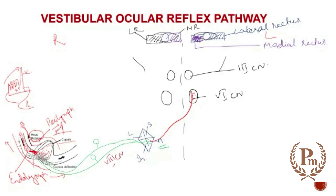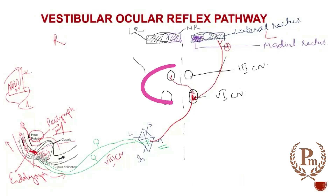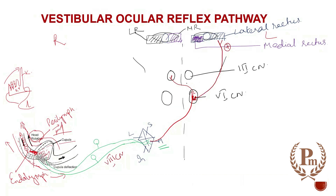From the vestibular nucleus, the fibers ascend and give the next-order neuron at the sixth cranial nerve. From the sixth cranial nerve, please pay close attention: the fibers go and directly stimulate the lateral rectus muscle, and via interneurons they go to the third cranial nerve. This connection from the sixth cranial nerve to the third cranial nerve is called the medial longitudinal fasciculus (MLF). From there, the next-order neuron supplies the medial rectus muscle.